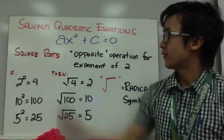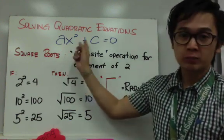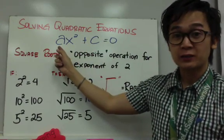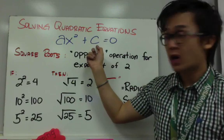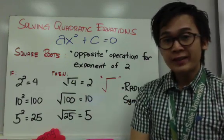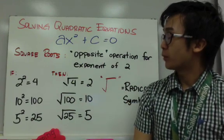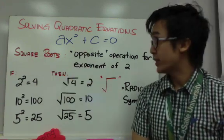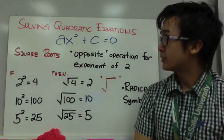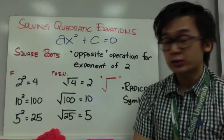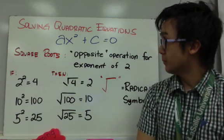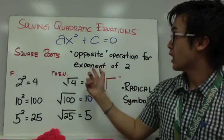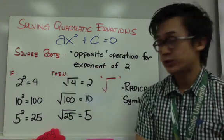Solving quadratic equations of the form ax squared plus c equals zero, where a is a real number and c is your constant. Before we can solve a quadratic equation of this form, you should know what a square root is. I believe you've seen square roots already in Algebra 1 and in Geometry. Square root is basically the opposite operation of any exponent of 2.